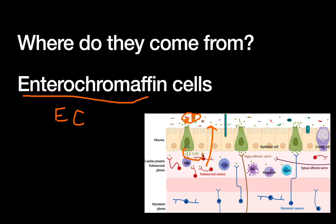As you'll note, EC cells often secrete serotonin, or 5-HT. This is how, when these sorts of tumors metastasize to the liver, they can cause carcinoid syndrome.